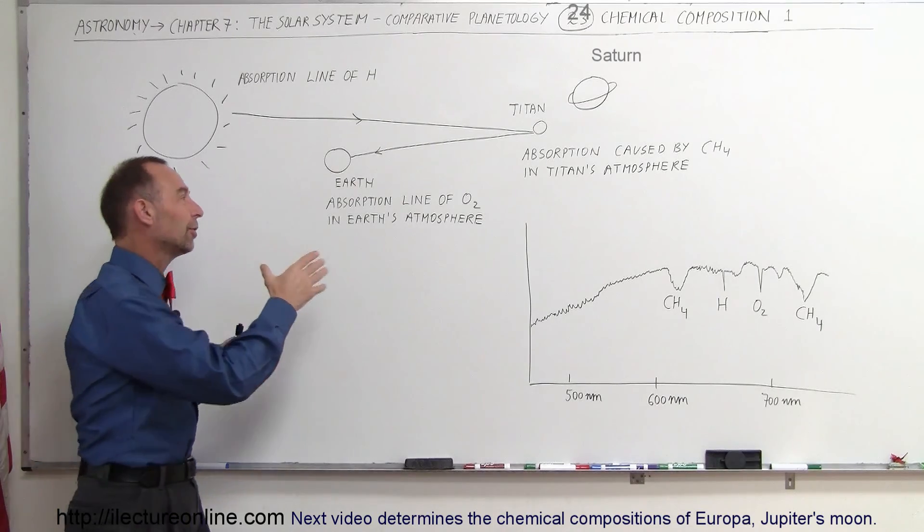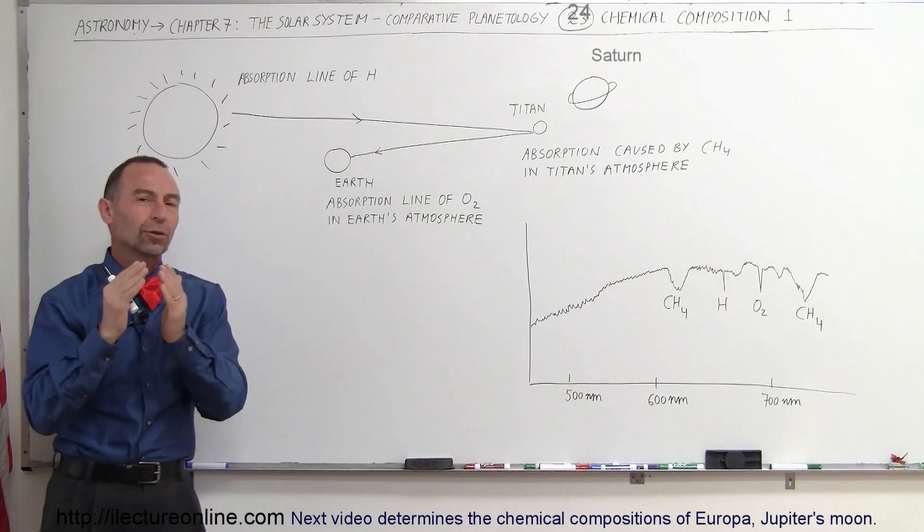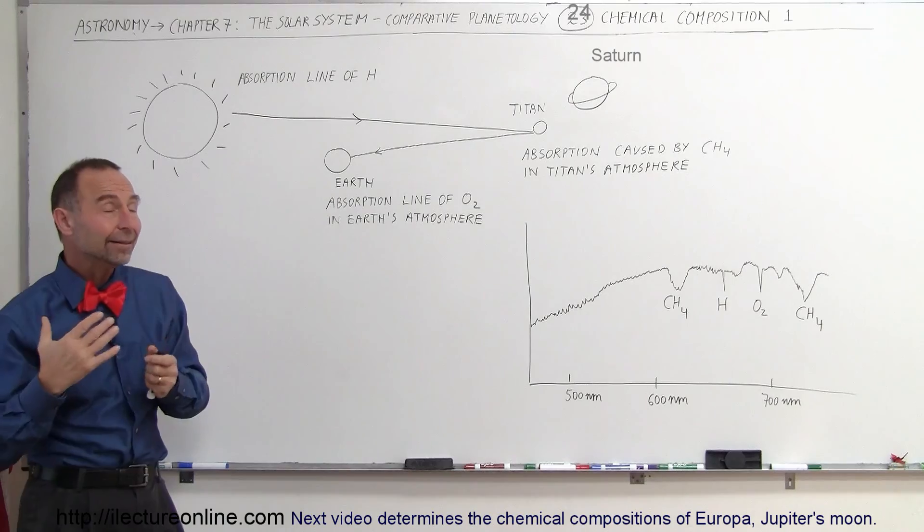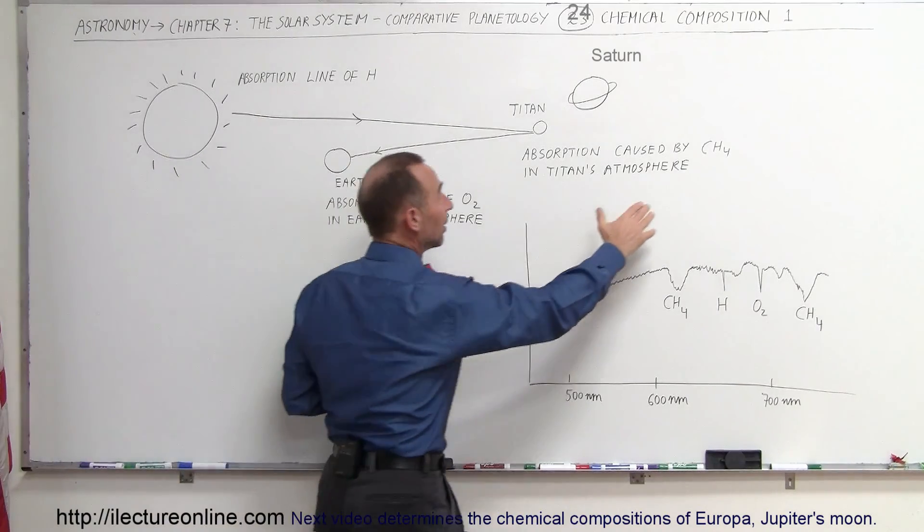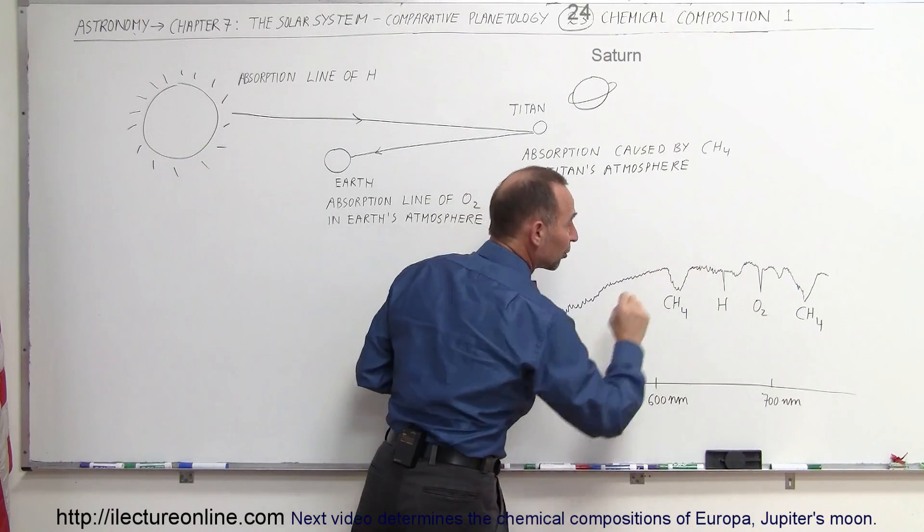In addition to that, when the light comes through our atmosphere, the Earth's atmosphere also absorbs oxygen, so that's going to be an absorption line in the light coming back to us from Titan as well. And then Titan, since the atmosphere is predominantly made of methane, then we can see the absorption spectrum of methane.